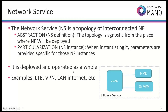We can take those network functions and combine them together in a topology of interconnected network functions — that's what we call the network service. The network service is mostly a topology or scenario of interconnected network functions. The idea is that you define and model it in an abstracted way, so that definition is agnostic from where the network functions will be deployed.